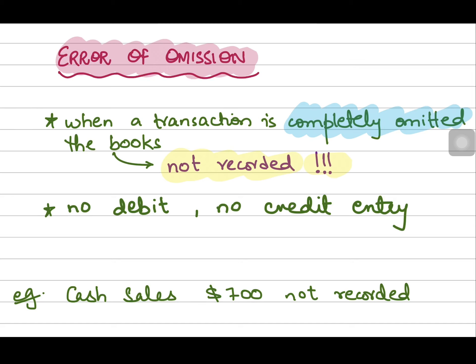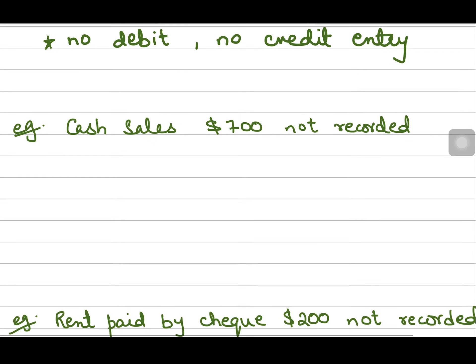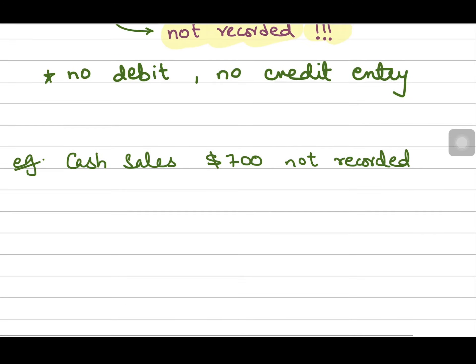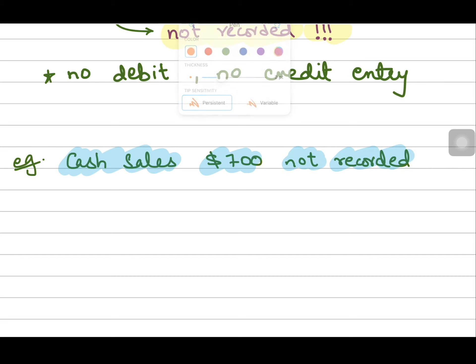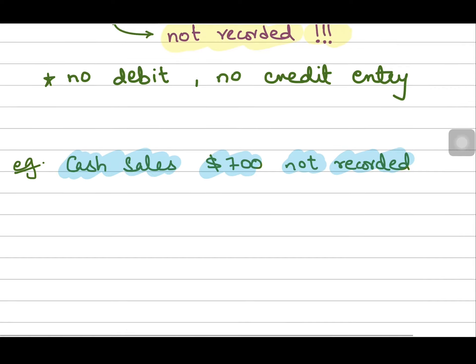This is called error of omission. For instance, if cash sales of 700 are not recorded in the accounts — if this transaction is omitted from the records — and you come to know after the preparation of your trial balance that you forgot to record this transaction, then you have to correct this error.